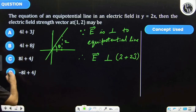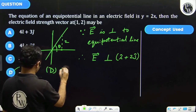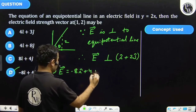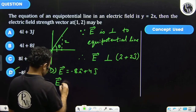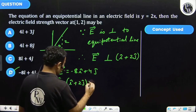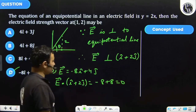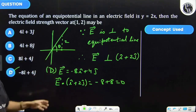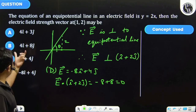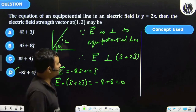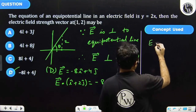The dot product will come to zero only with option D. For option D, this condition is satisfied — confirming the answer relates to equipotential surfaces.